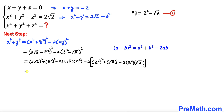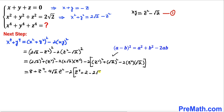Let's simplify the right hand side further. The first part becomes 8 plus z to the power 4 minus 4 times square root of 2 times z squared. Then for the second part: negative 2 outside, and inside the bracket that becomes z to the power 4 plus 2 minus 2 times square root of 2 times z squared. Distributing the negative 2 gives negative 2z to the power 4, minus 4, plus 4 times square root of 2 times z squared.